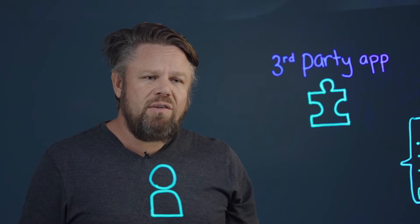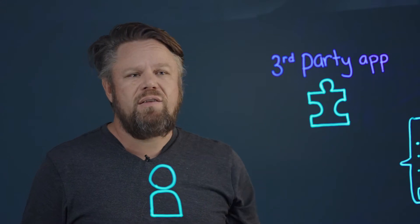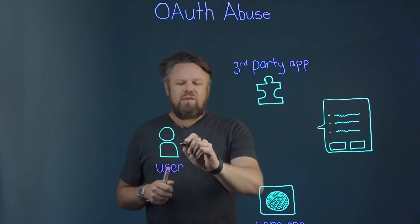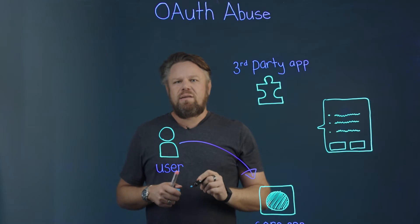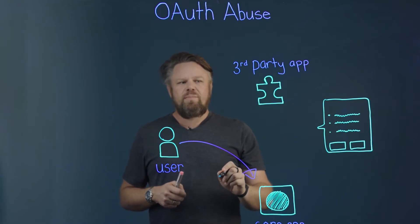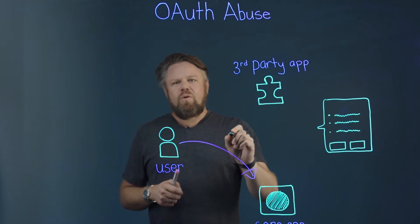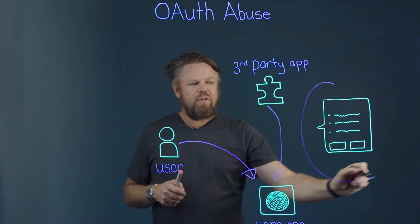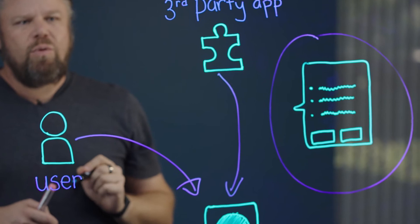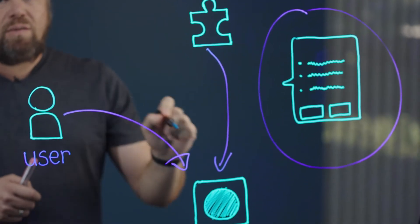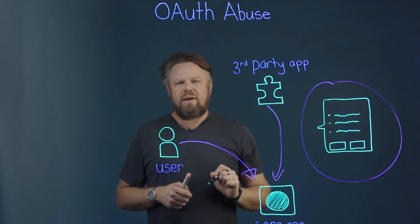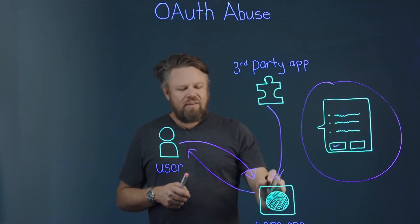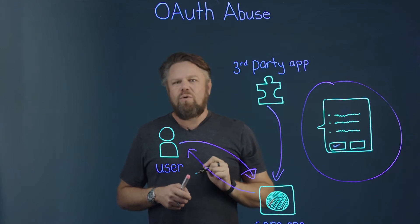What occurs in this situation is a user is going to authorize a third-party application. As they authorize that third-party application, they send a message to the core application that they would like this third-party app to be authorized. That application then makes a request asking whether it can access certain data, behaviors, and functions in the core application. If you agree, now this application has access to your data and what's happening inside your environment.